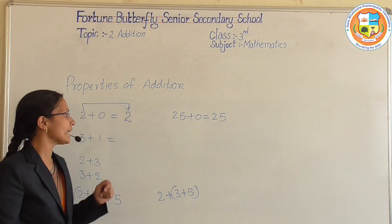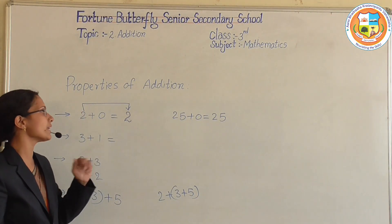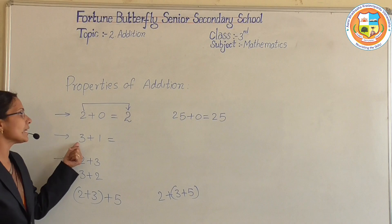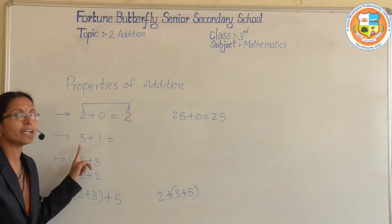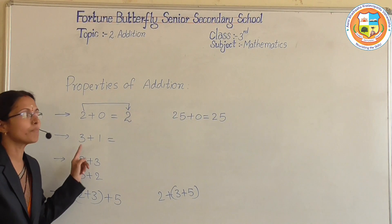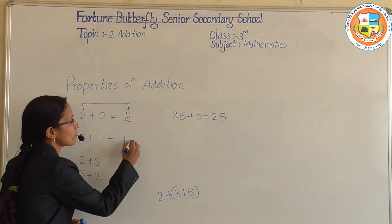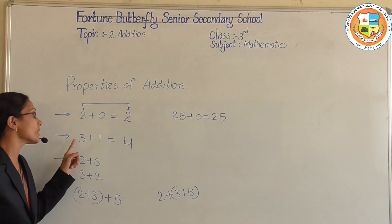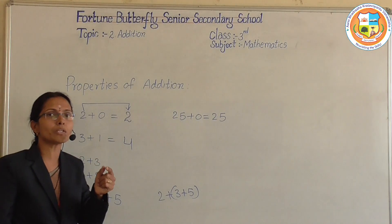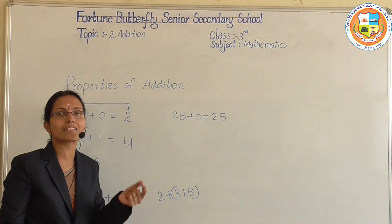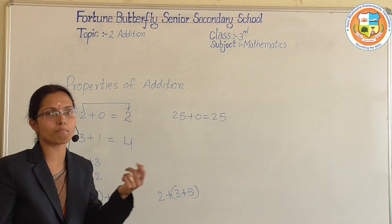The next property is adding 1 to any number. I am adding 3 plus 1 as an example. If I add 1 to any number, here 3 plus 1, we will get 4, which is just after 3. So if we add 1 to any number, we will get the result that is just the next number after that number.